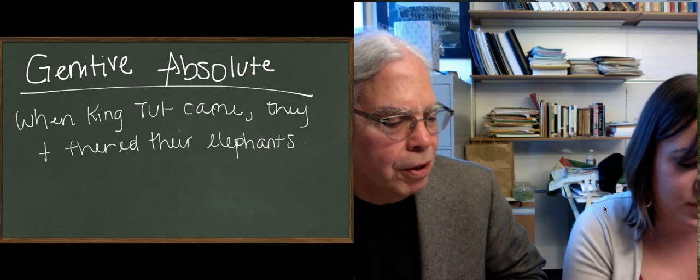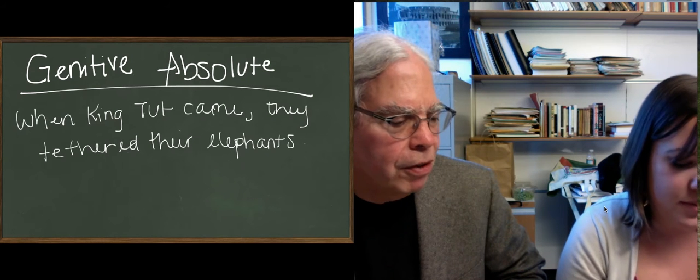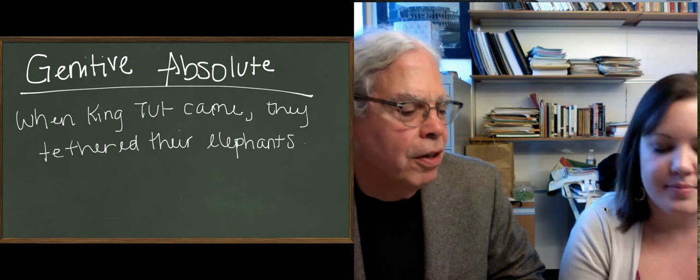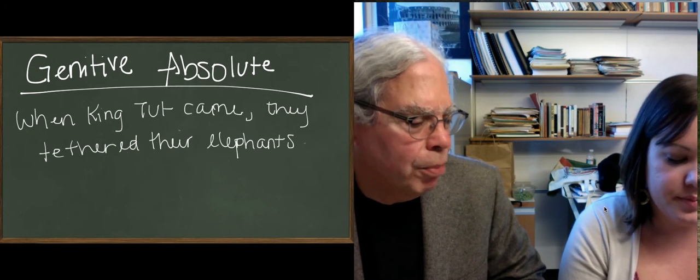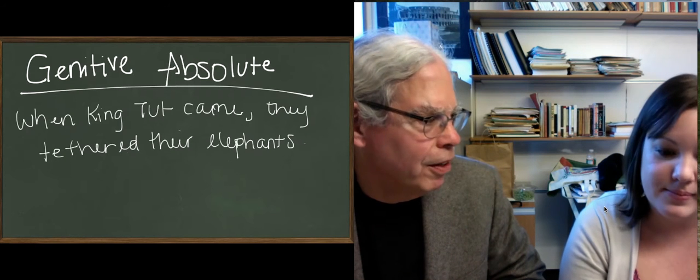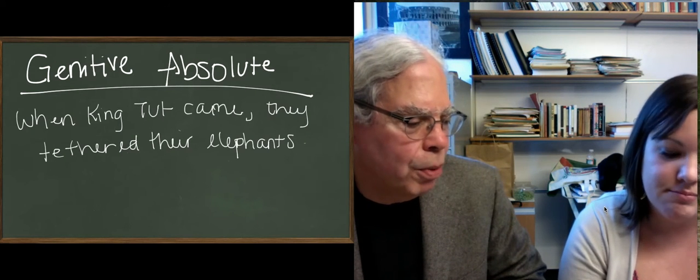So, what do you do in Greek if you have something like that? Well, we just learned one way you can do this. You have a word for when and you say King Tut and it's a past definite temporal clause, right? But, you know, Greek loves participles, and it loves to do subordinate clauses with participles.